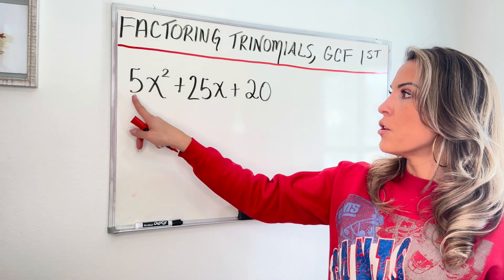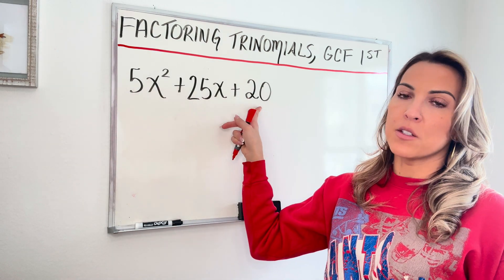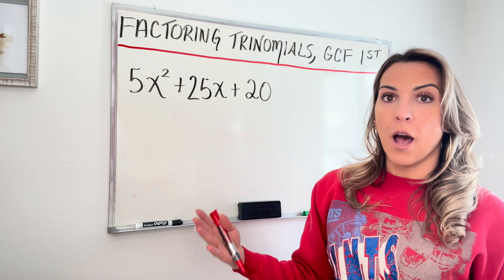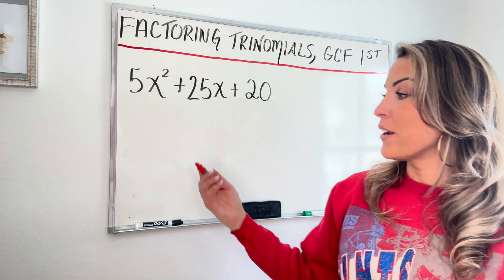So looking at the three coefficients, 5, 25, and the constant 20, I noticed that there is a common factor here. And that common factor is five.